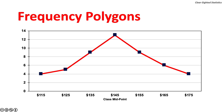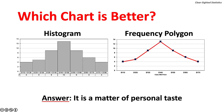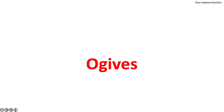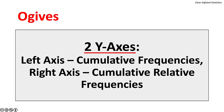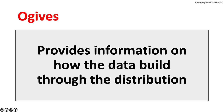Here is an example of a frequency polygon charting the same frequency distribution as the histogram. Which chart is better? It is a matter of personal taste. Informal surveys suggest histograms are preferred over frequency polygons. Ogives, or cumulative frequency polygons, are used to chart cumulative frequency distributions. When properly drawn, ogives present a detailed portrait of the data. Ogives are x-y scatter charts, not line charts. Properly drawn ogives have two y-axes: the left axis shows the cumulative frequency, and the right axis shows the cumulative relative frequency.